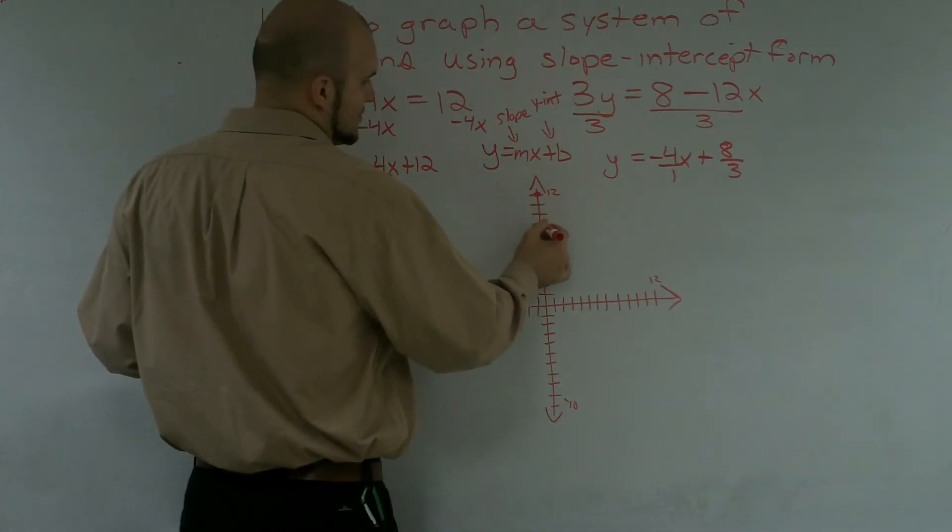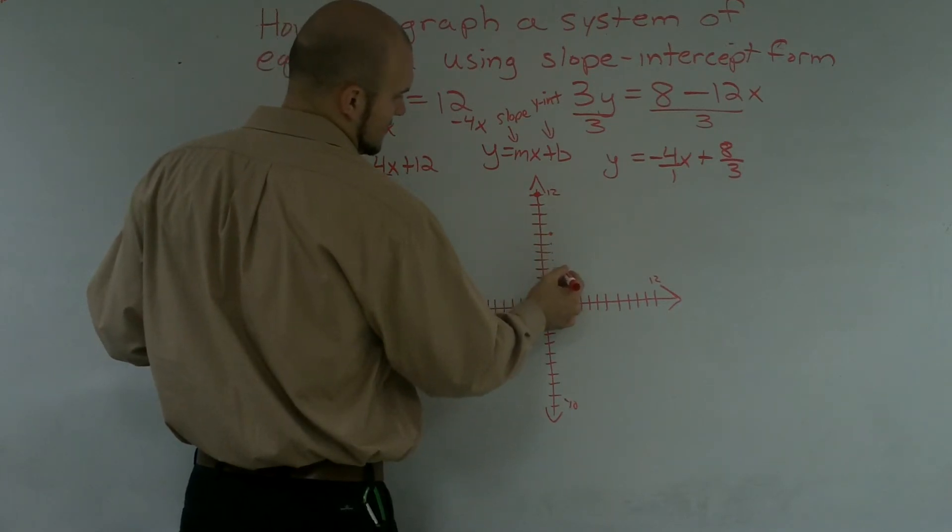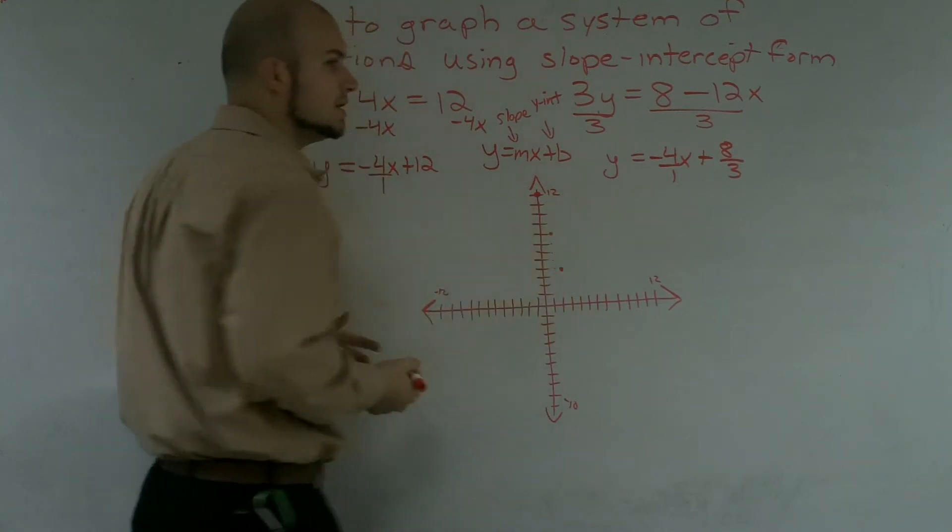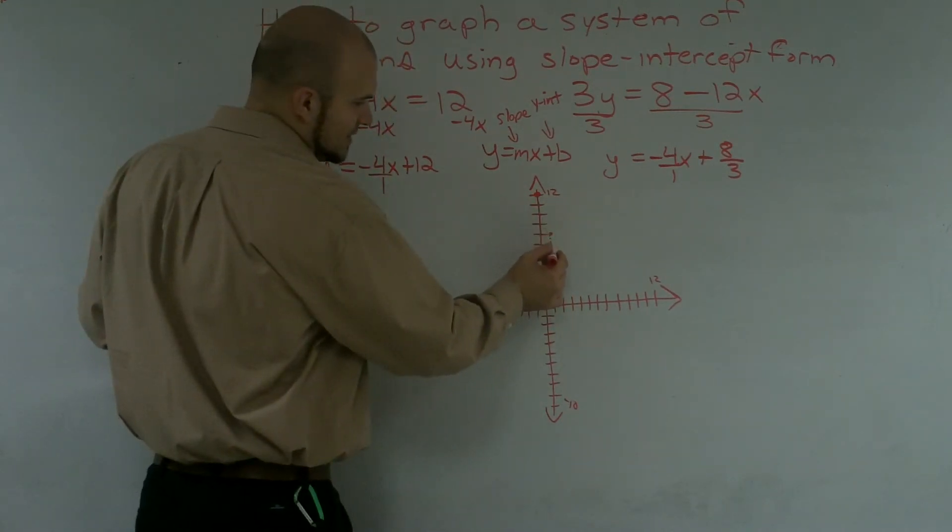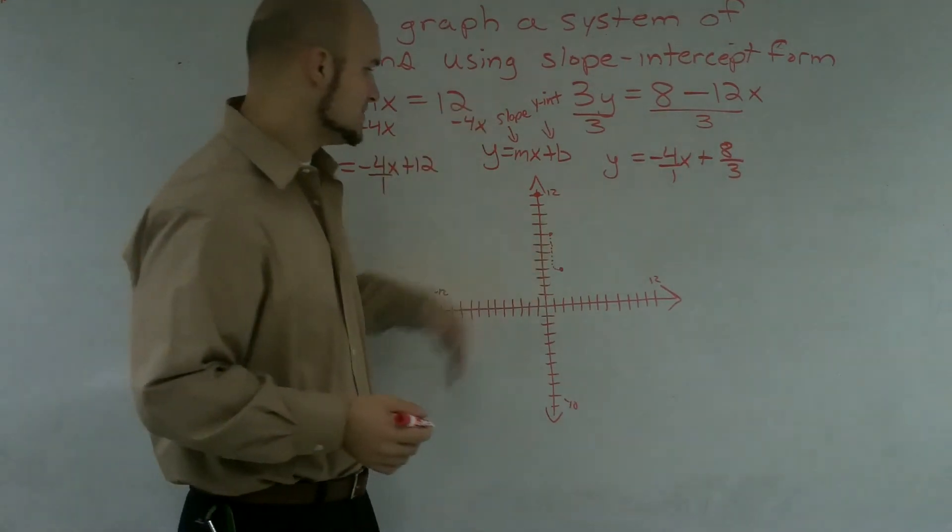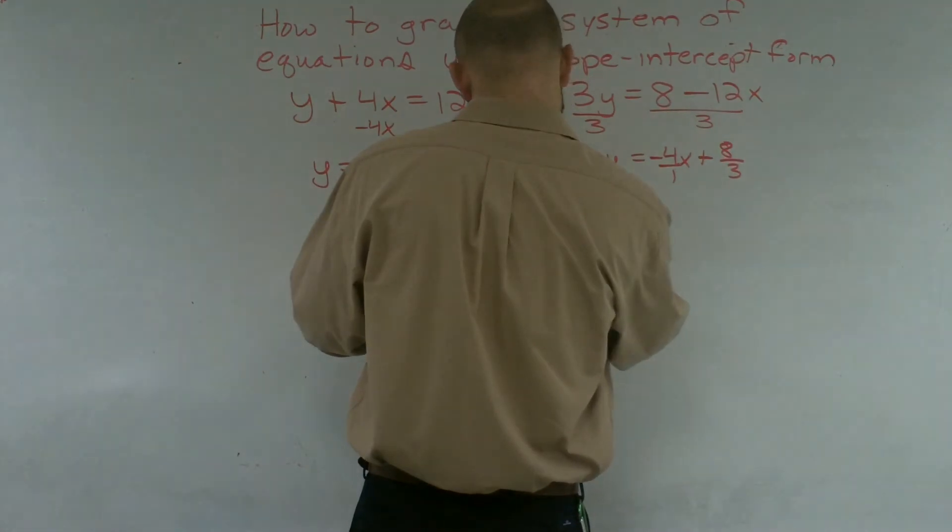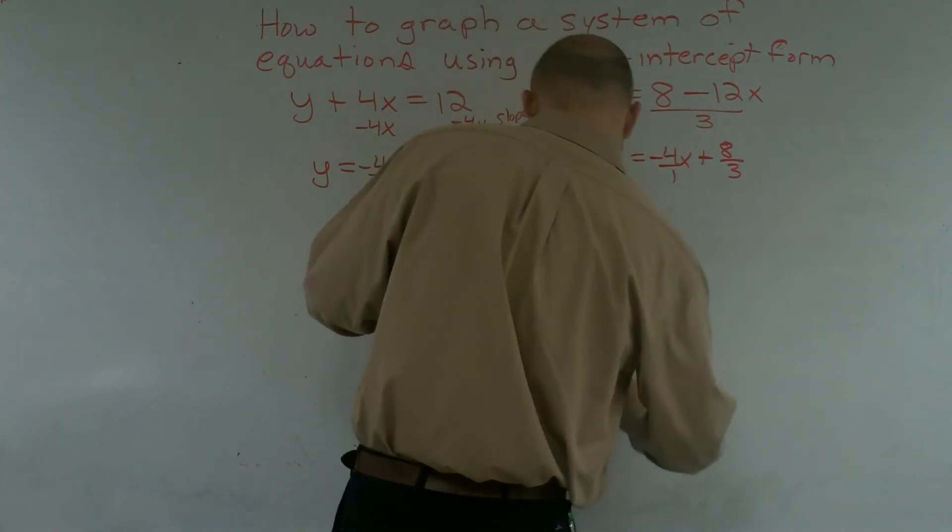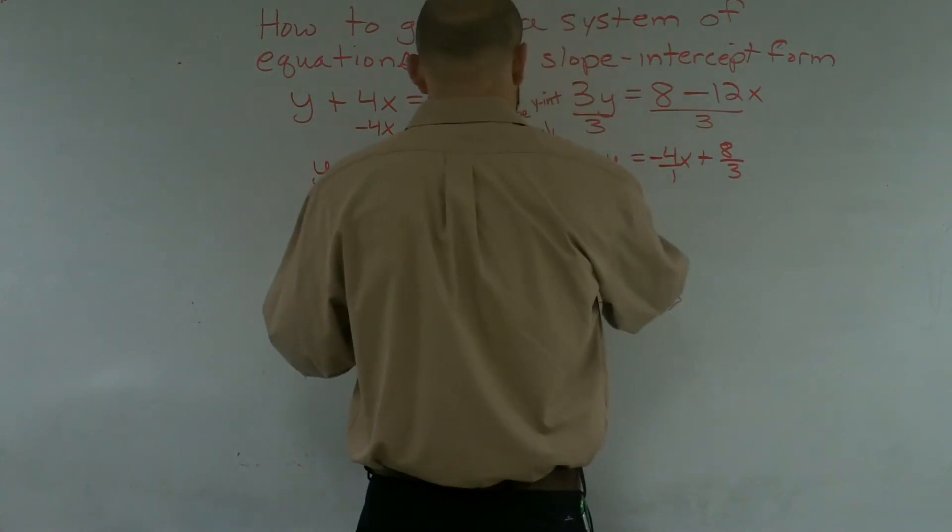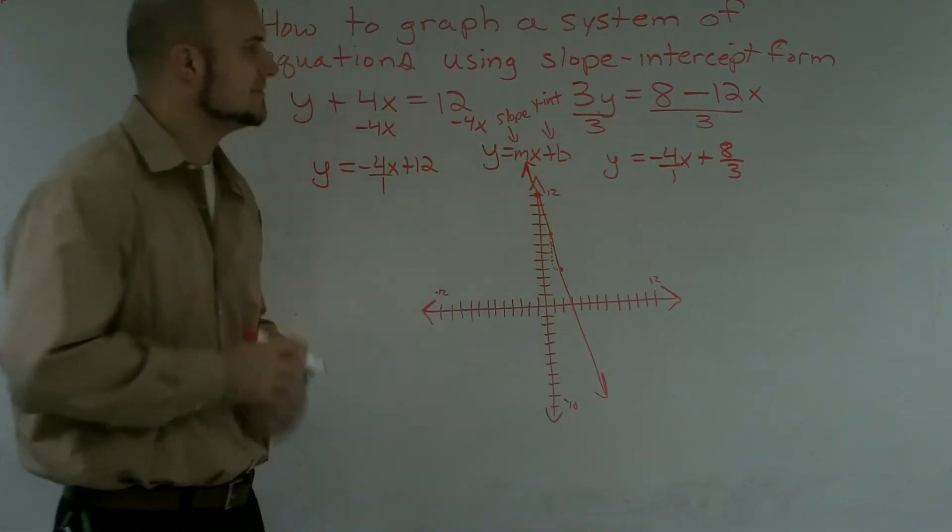So down 4, counting 1, 2, 3, 4, to the right 1. And I'll do this again, 1, 2, 3, 4, to the right 1. So what this is doing is what we call our slope triangle when you kind of create going down 4 and over 1, it's kind of creating your slope triangle to make a point. So I'll do a rough sketch of what that graph would look like.